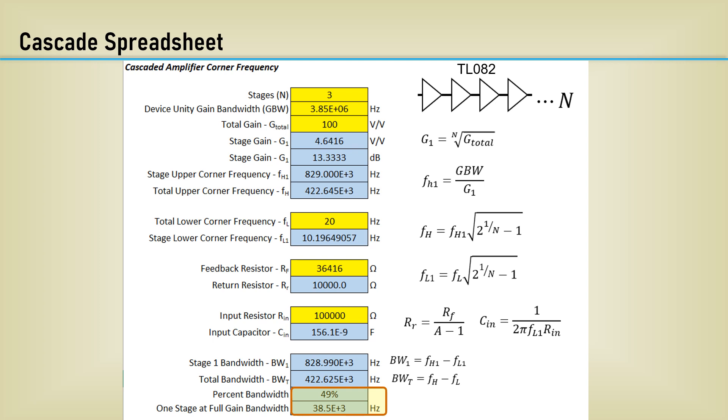But all is not lost. The bottom cell calculates what the bandwidth would have been if you ran one stage at a gain of 100, which is only 38.5 kHz.